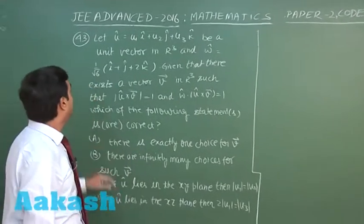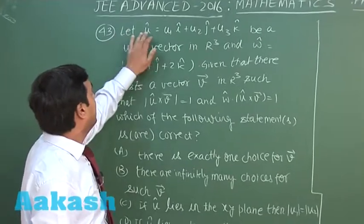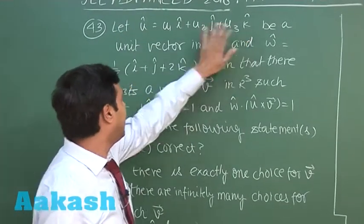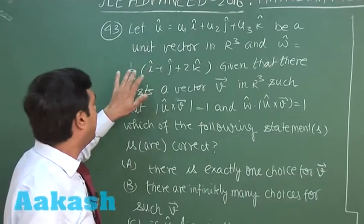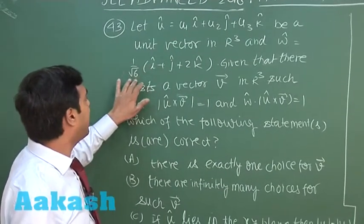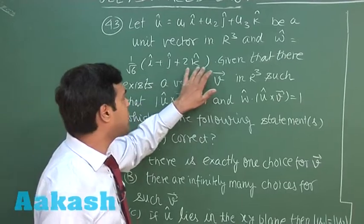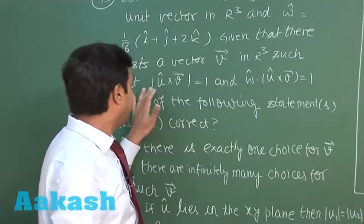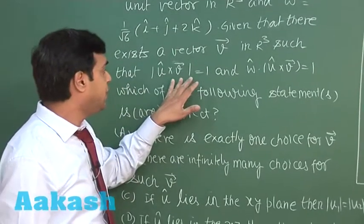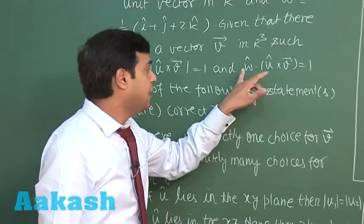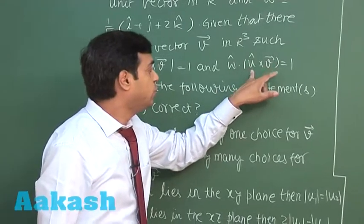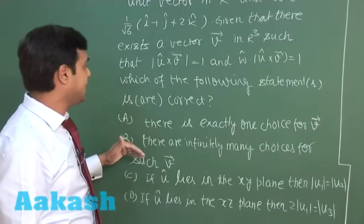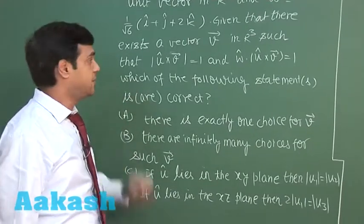Let's take question number 43. Let u-cap equal u1·i + u2·j + u3·k be a unit vector, and w-cap equals (1/√6)·i + j + 2k. Given that there exists a vector v such that |u × v| = 1 and w-cap · (u-cap × v) = 1, which of the following statements are correct?